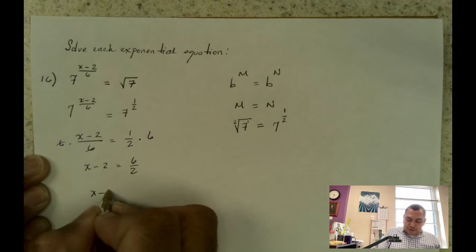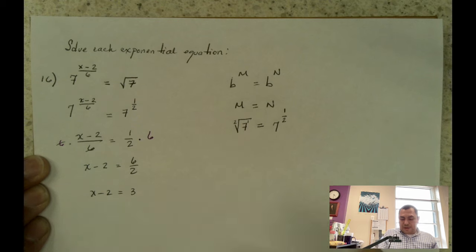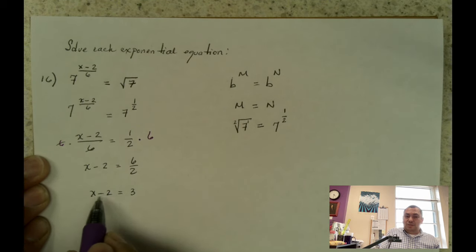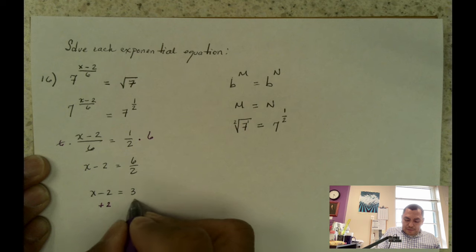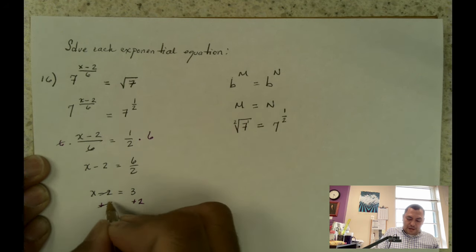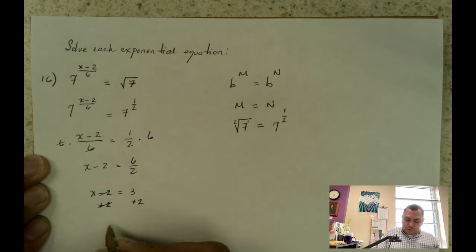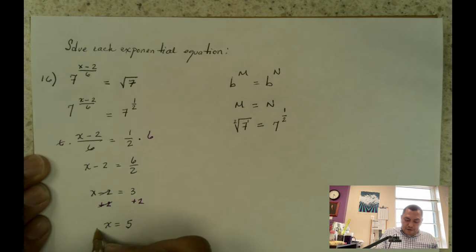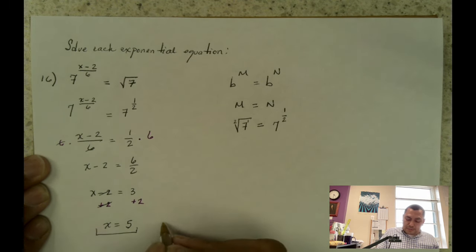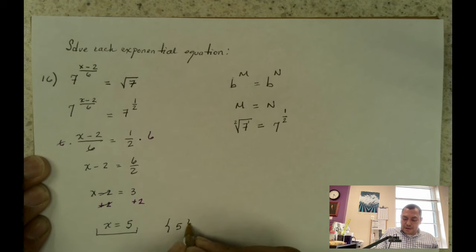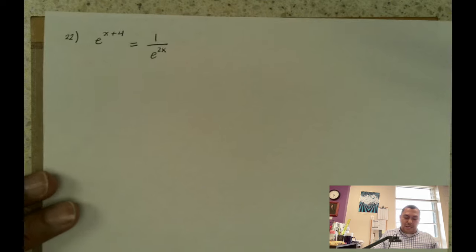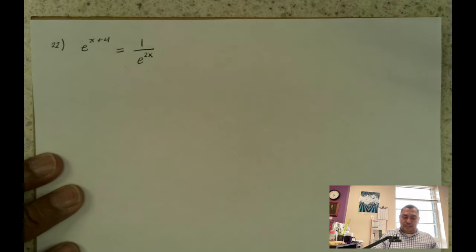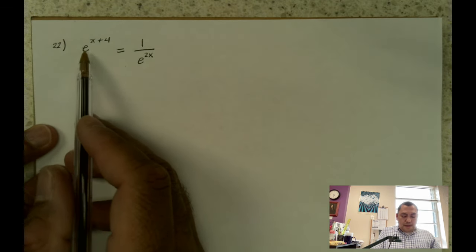So I have x minus 2 equals to 3. Since 2 is subtracting, I'm going to add 2 to both sides. These two cancel and 3 plus 2 equals 5. So that's the solution for problem number 16. My solution is x equals 5.